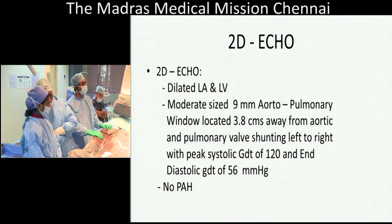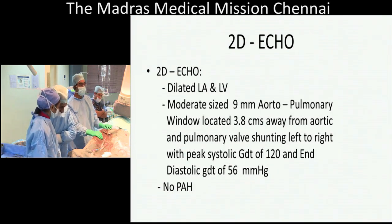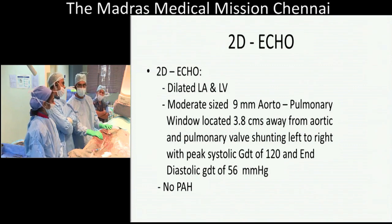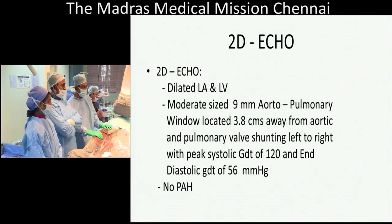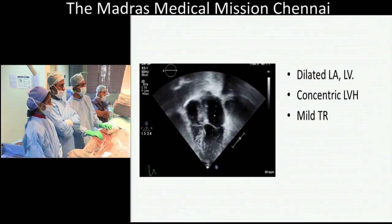The 2D echo showed dilated LA and LV. There is a moderate size 9 mm aortopulmonary window located 3.8 cm away from the aortic and pulmonary valves, shunting left to right with a peak systolic gradient of 120 and end diastolic gradient of 56. There was no pulmonary arterial hypertension.